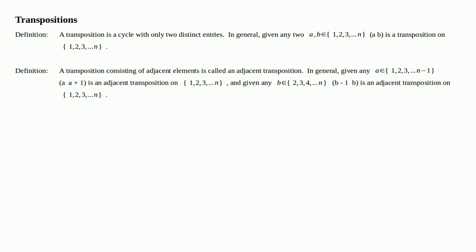And given any b in the set 2 through n, (b-1, b) is an adjacent transposition on the set 1 through n because b-1 is right next to b. That's why it's an adjacent transposition—because the two entries are adjacent to each other. For example, the transposition (3 4) is an adjacent transposition on the set 1 through 4 because 3 is right next to 4.